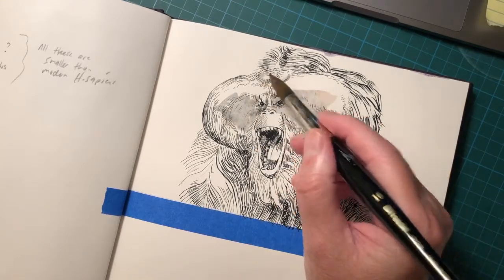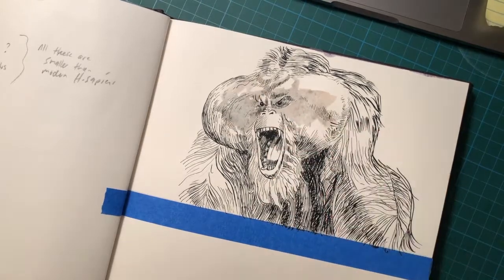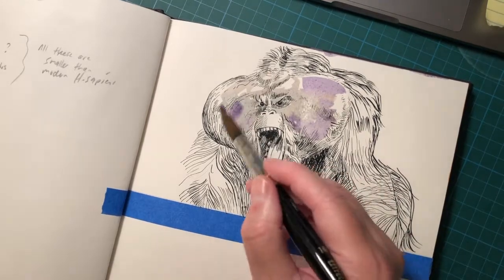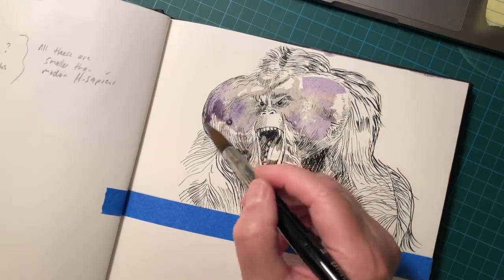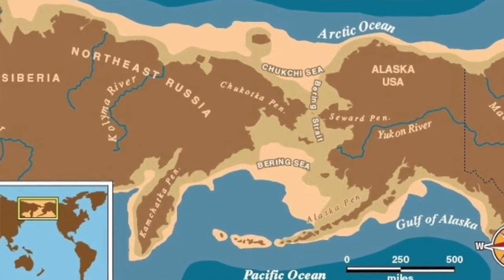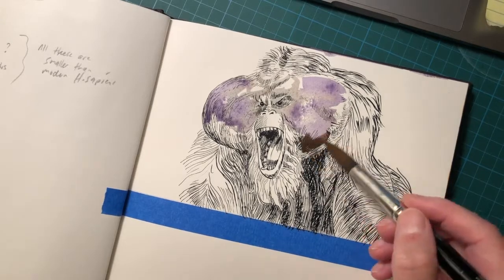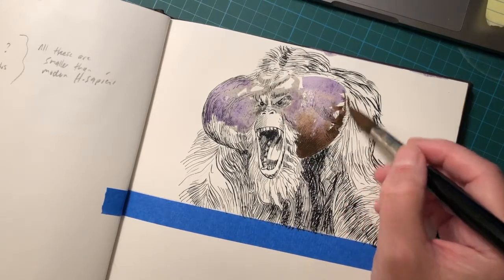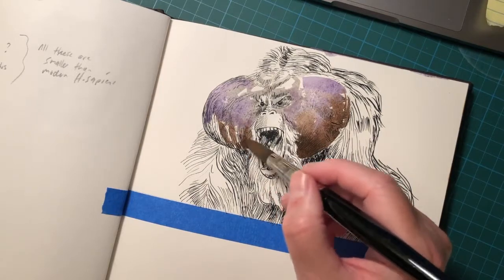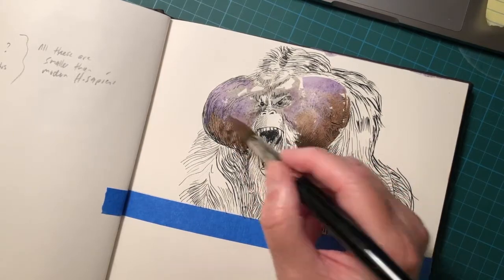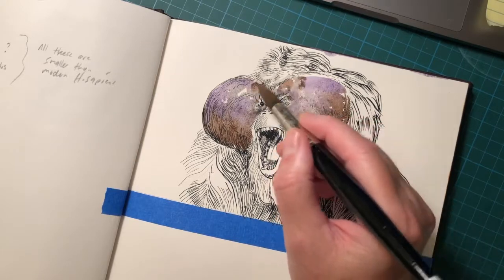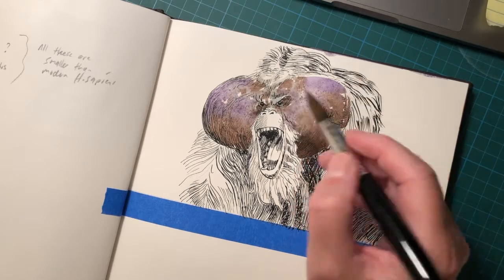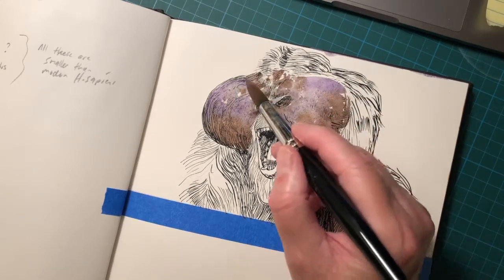Gigantopithecus is basically considered one of the main contenders for Bigfoot. The idea is that maybe this thing came across the Bering land bridge thousands of years ago — possibly around half a million years ago — and then took up residency somewhere in the Pacific Northwest or the Americas. There's not a lot of evidence for this, just as there's not a lot of evidence for Bigfoot generally, but as a contender theory it has some sense to it.